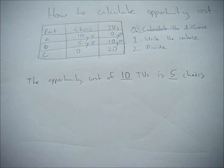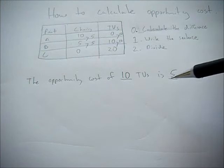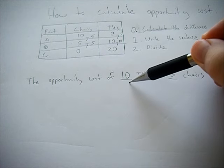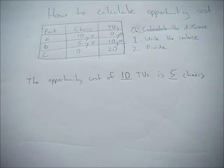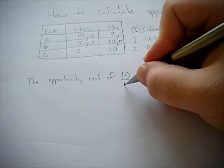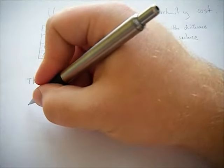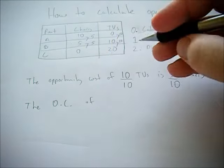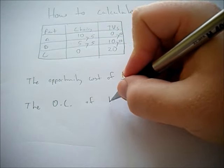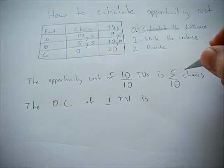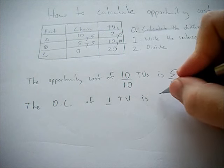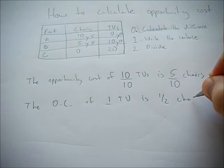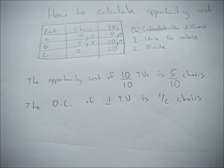The opportunity cost of 10 TVs is 5 chairs. Now we need to divide both of these numbers by 10 so that we get the opportunity cost of 1 TV. Divide both numbers by 10 and rewrite the sentence. The opportunity cost of 1 TV is 5 divided by 10, or one-half chairs.